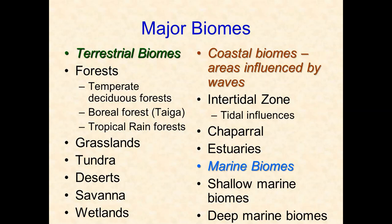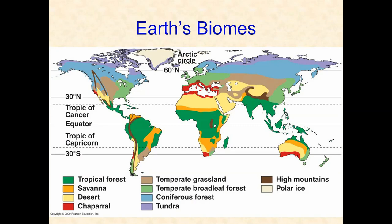Here is a map of Earth's biomes, where each color represents a different biome. The major controlling factor of where biomes are located is climate. Climate involves everything from precipitation and temperature to humidity, cloud cover, and winds. That is the major driving factor of biome distribution.